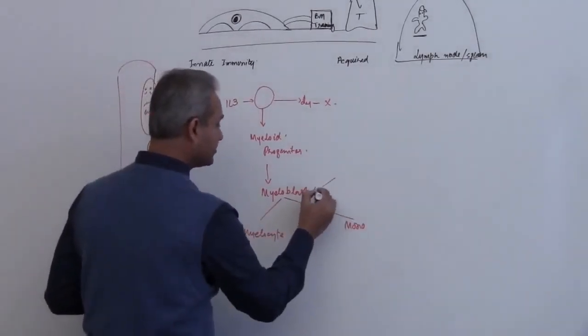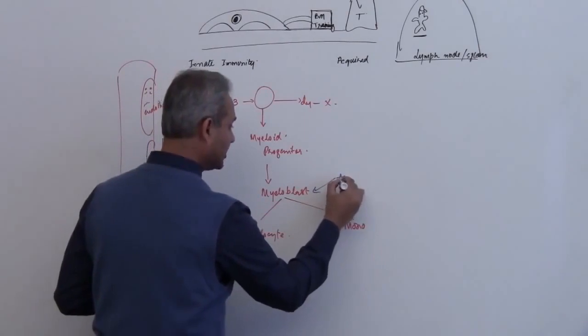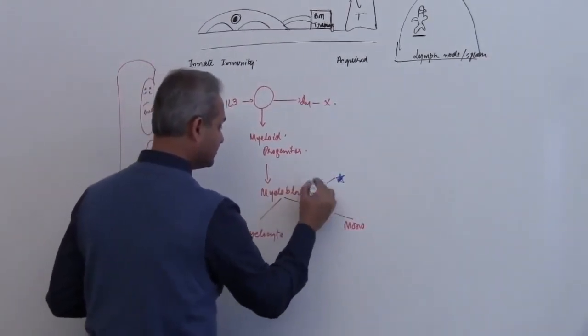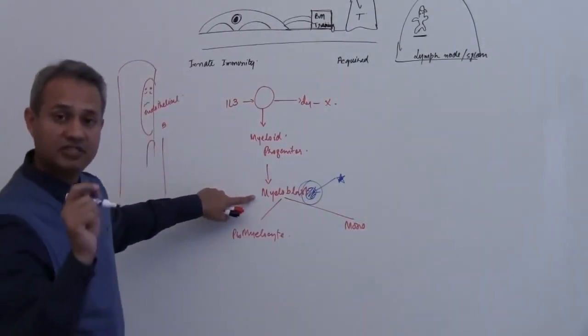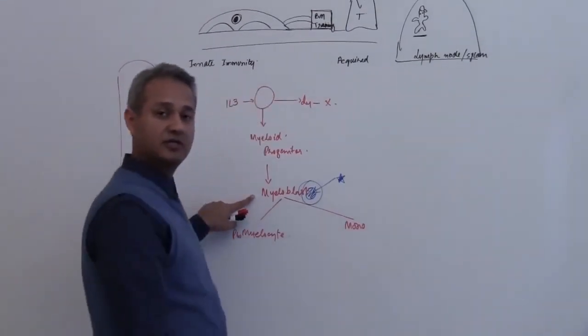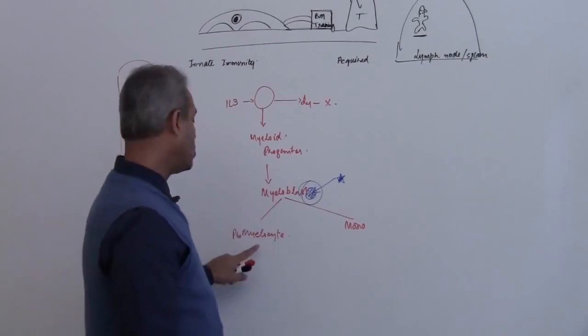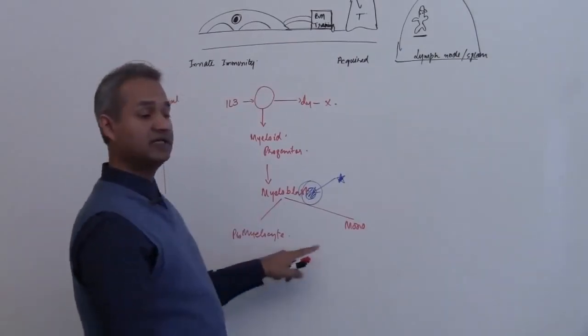We have chemical substances which can come and act on these cells. Think about it, if we stimulate the myeloblast, that would make more and more of granulocytes and monocytes.